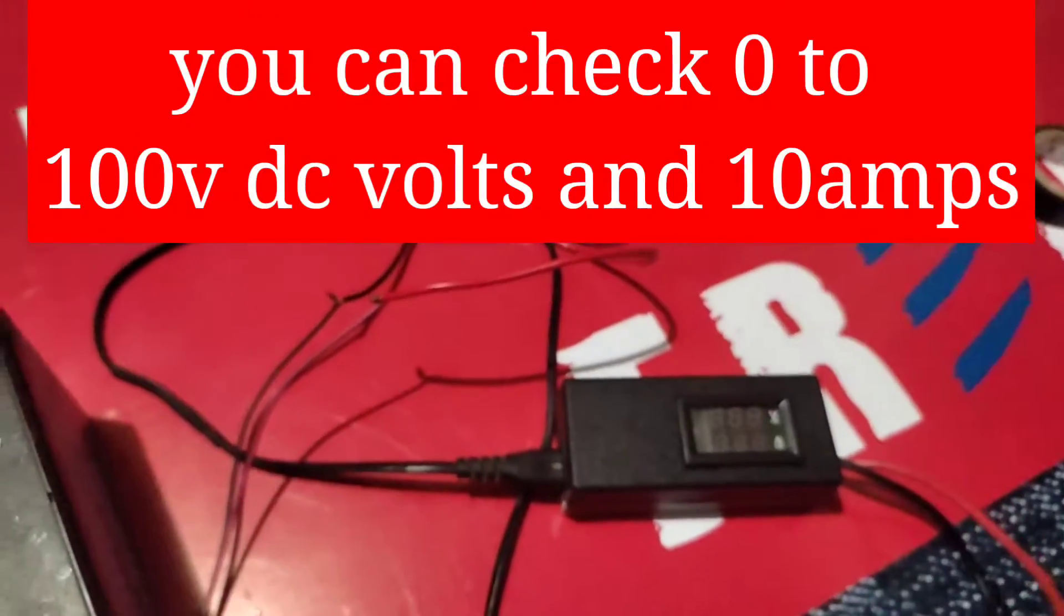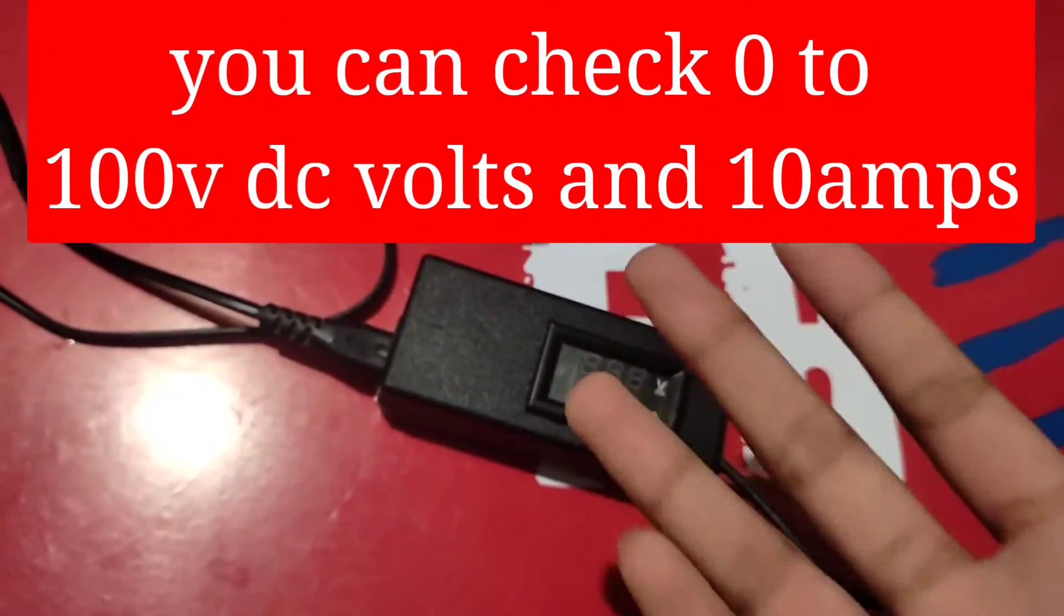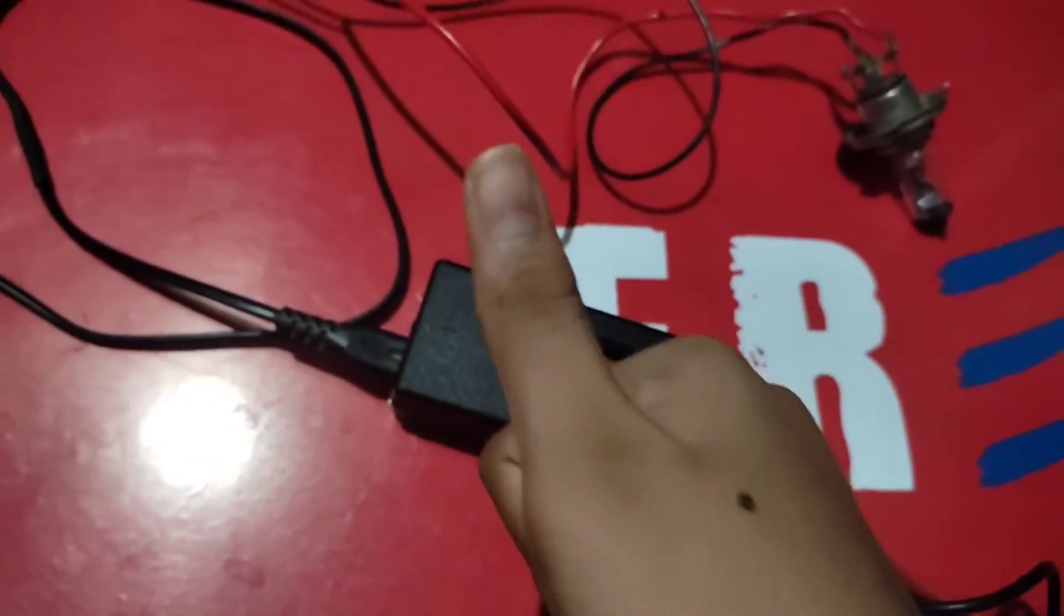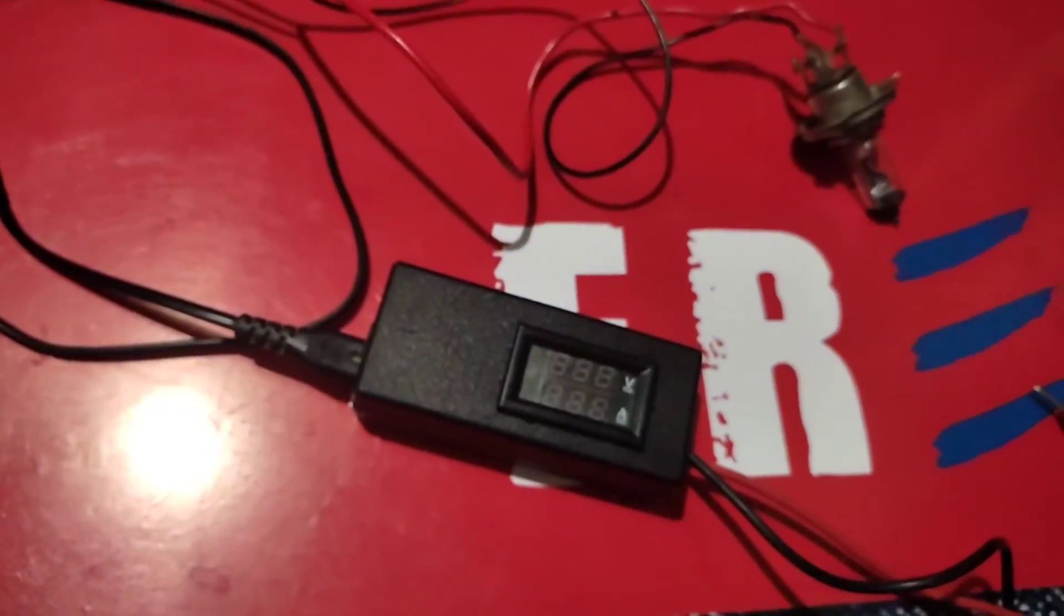This is the amp and voltage meter DC volts. You can check 0 to 100 volts for this meter. This is the video, if you like this video please give a thumbs up and share this video. Please subscribe to my channel and don't forget to comment. Bye friends.